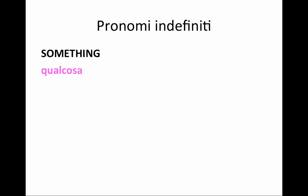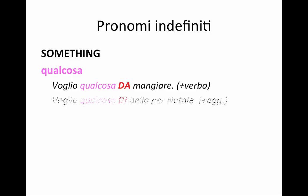Lastly, something — qualcosa. However, there is a small difference depending on the context. If qualcosa is followed by a verb, it's accompanied by the preposition da: 'voglio qualcosa da mangiare' — something to eat. However, if it's followed by an adjective, it's followed by di: 'voglio qualcosa di bello' — I want something nice.